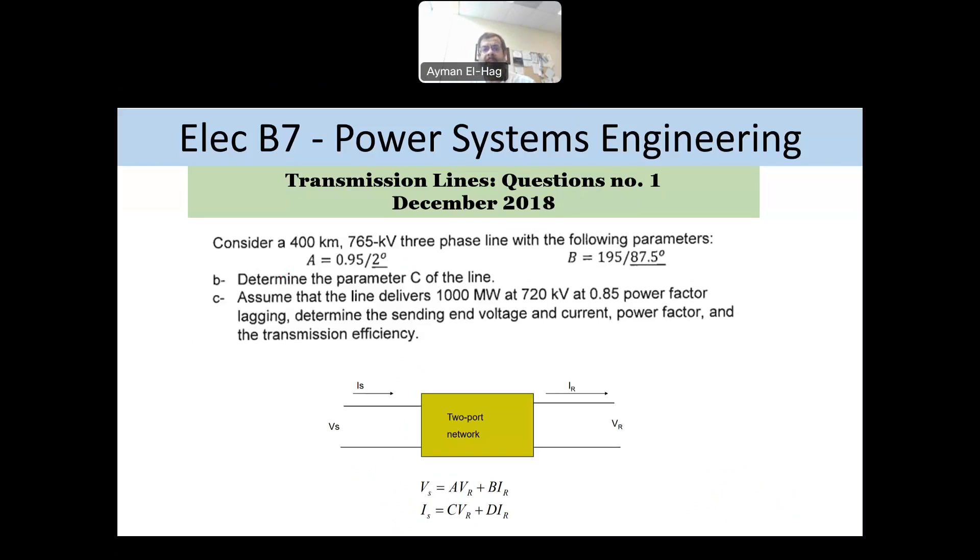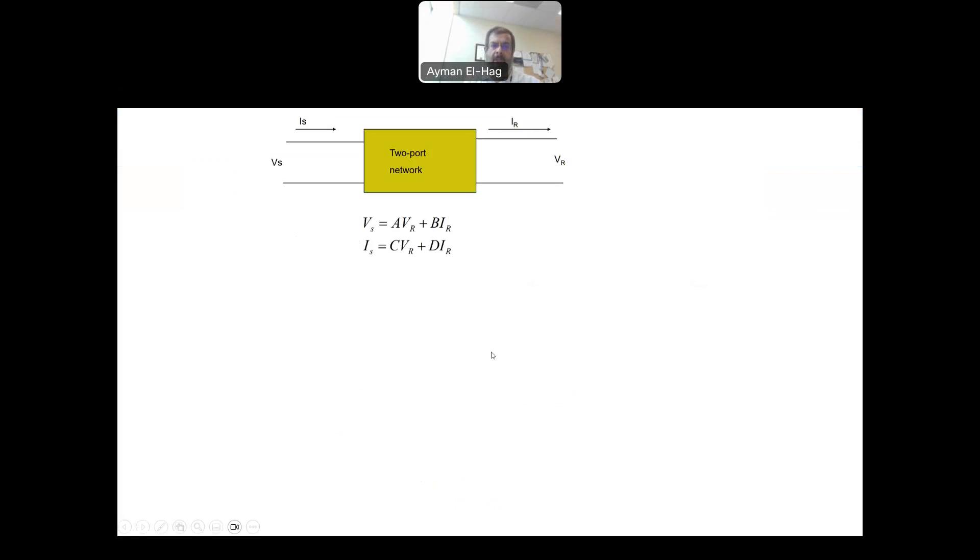Before going into the details of the question, I'd like to give some background about this type of question. Basically, the transmission lines, you are using what we call the two port network ABCD parameters. These parameters are basically to relate the sending end or the input to the VR, IR, or the output voltages and current through these parameters. So we don't basically use KCL and KVL, although these ABCD parameters are derived from conducting KCL and KVL on the transmission line model.